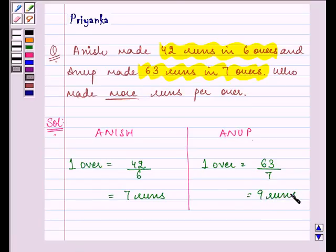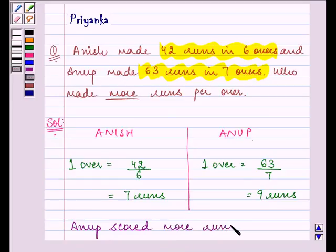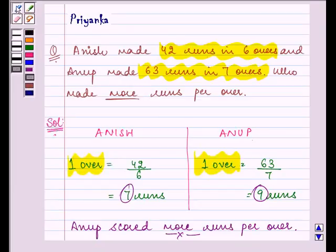So, now you can easily tell me who scored more runs — it is Anup who scored more. Anup scored more runs per over. He scored 9 runs in comparison to Anish who scored 7 runs. Isn't that easy to find out what they have scored per over? Try to do this calculation yourself when you will be playing cricket. Bye for now.